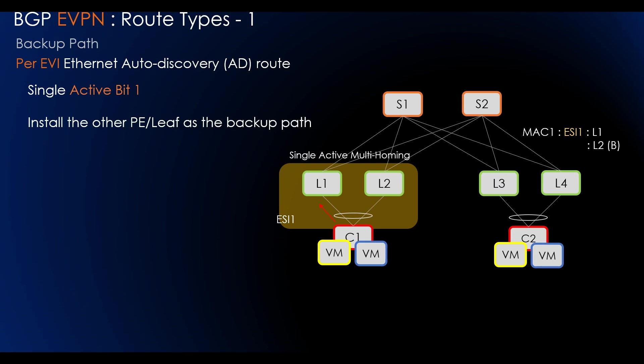When we have single-active multi-homing, the backup path is used. The backup path is used in single-active redundancy mode. In this case, the PE also advertises that it has reachability to a given ES using the same combination of Ethernet AD per EVI route, but the single-active bit is set to 1. Whereas in all-active, the bit is set to 0. A remote PE that receives a MAC IP advertisement with an ESI advertises the MAC address to be reachable via the PE that has advertised with the combination of Ethernet AD routes, and it installs that route as a backup path.